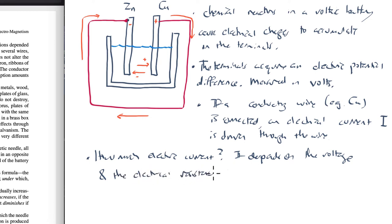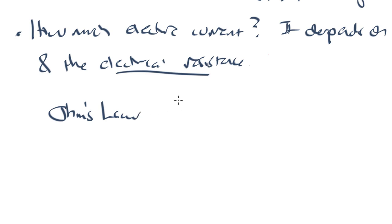So the voltage that's being applied to this, that's trying to drive the current through it, depends really essentially on the strength of the chemical reactions, or the rapidity with which these chemical reactions happen, and can accumulate the positive and negative charges on the terminals. Whereas the electrical resistance is a property of the wire itself. These two factors, the voltage and the electrical resistance, and how they affect the current, is captured by a formula now known as Ohm's Law, which relates the electrical current flowing through the wire to the electrical potential difference that's trying to drive the current, and the electrical resistance of the wire itself.